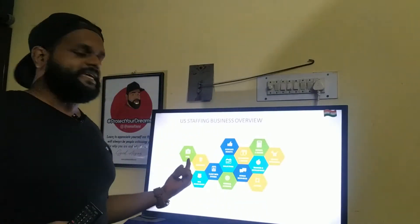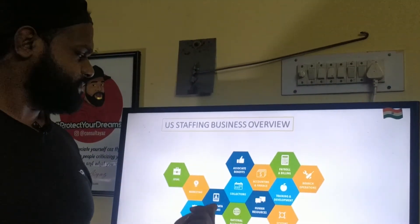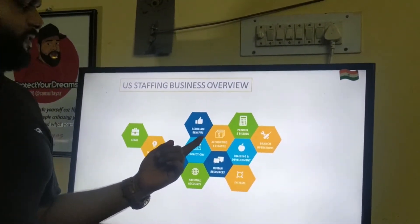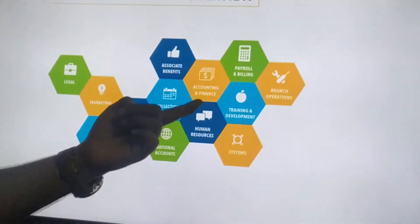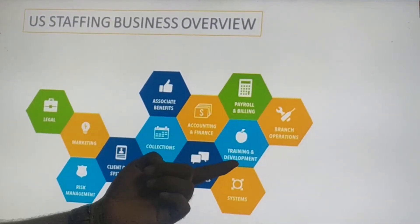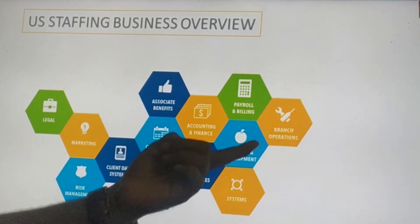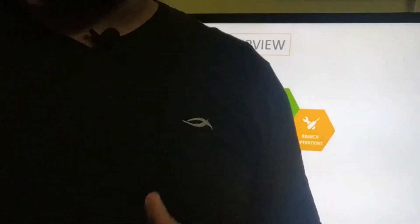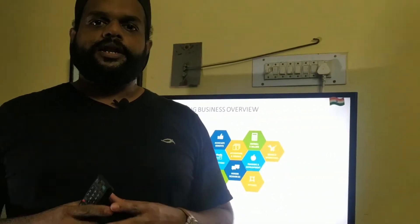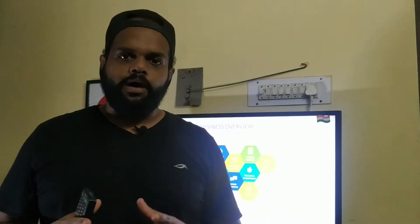We shed light on different departments, different functions, and different roles that happen within a staffing business, including legal, marketing, risk management, client data systems, collections, associate benefits, national accounts, human resources, accounting and finance, payroll and billing, training and development, systems and branch operations. In the latest staffing trends, a new thing getting included in the staffing segment is GDPR compliance — global data regulation and protection — which is really important for all staffing agencies.